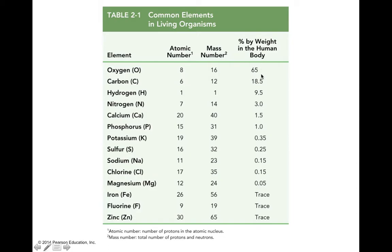Looking at percentage of weight in the human body: oxygen is number one at 65%, carbon is almost 20%, hydrogen is almost 10%, then nitrogen, calcium, and phosphorus each get single digits. Everything after that is considered trace elements — under one percent by weight in the human body. We'll also be looking at atomic number, mass number, and atomic weight.